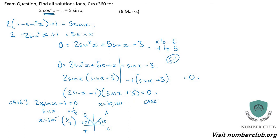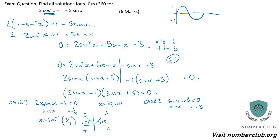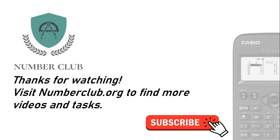Case 2: sine of x plus 3 equals 0, so sine of x equals negative 3. You can try putting that into the calculator, but you'll get an error. The sine wave has a maximum of 1 and a minimum of negative 1 — sine of anything cannot equal negative 3. So write: no solutions generated. Make sure you put your final answers clearly: x equals 30 and x equals 150 degrees.